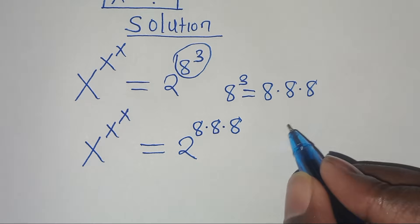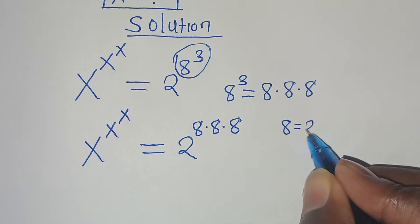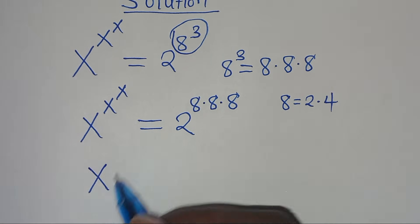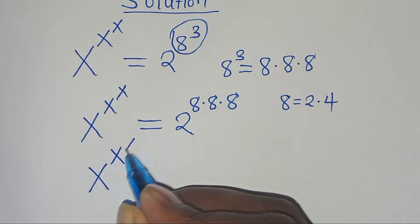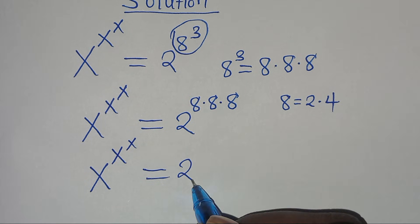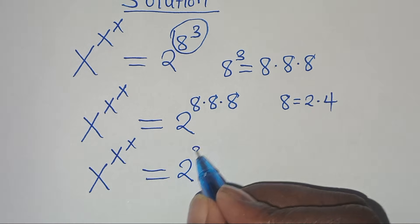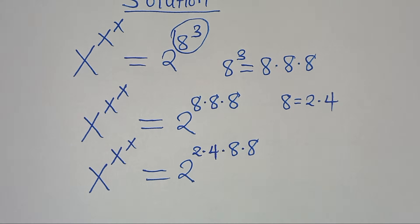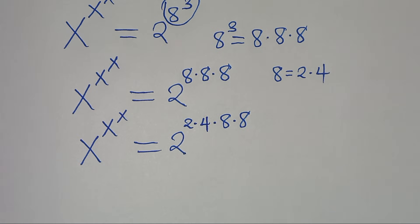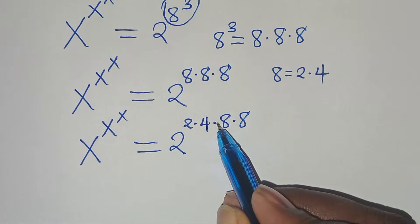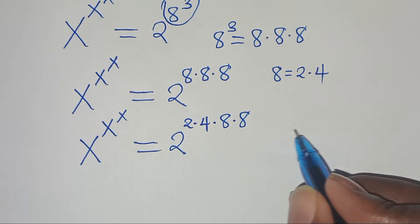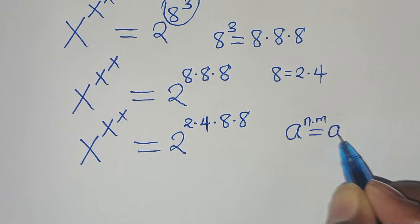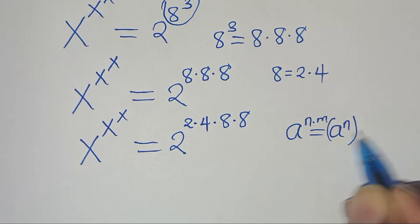Now we can express 8 as 2 multiplied by 4, so x^(x^x) = 2^(2 × 4 × 8 × 8). Now, 2^(2 × 4 × 8 × 8) is in the form a^(n × m), which we can express as a^n raised to the power of m.